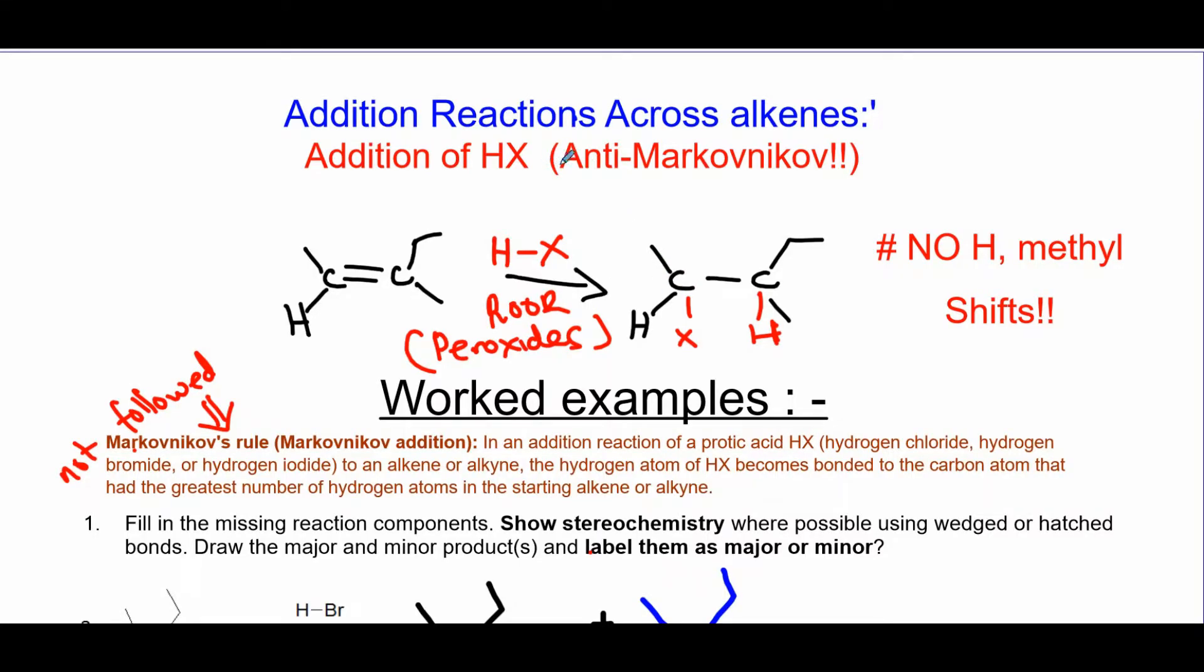Welcome again, Dr. M here. We're going to talk about an anti-Markovnikov addition reaction across the double bond of the alkene. Usually for anti-Markovnikov additions, you should see a peroxide. That's a huge, enormous clue that I just gave you for free right there.